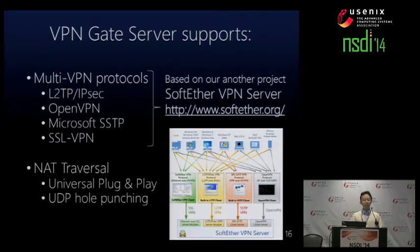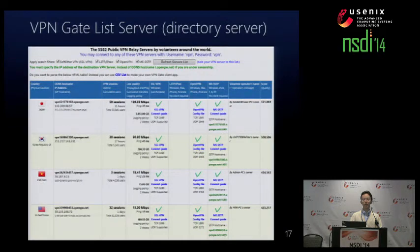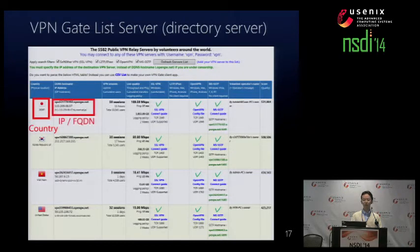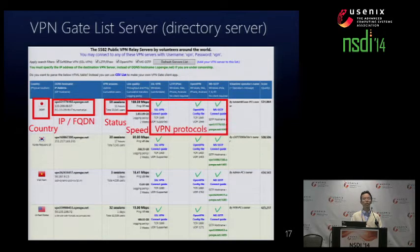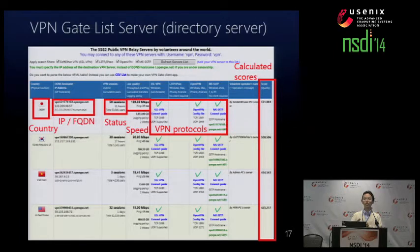VPN Gate server also supports NAT traversal. We created the directory server — the VPN Gate list server — on our facility. It contains IP addresses of running VPN Gate servers, country, IP address, status, uptime, bandwidth, and list of supported VPN protocols. A user can copy and paste this IP address into, for example, Windows, macOS, laptop, smartphone, iPhone, or Android VPN clients in order to connect to the server.